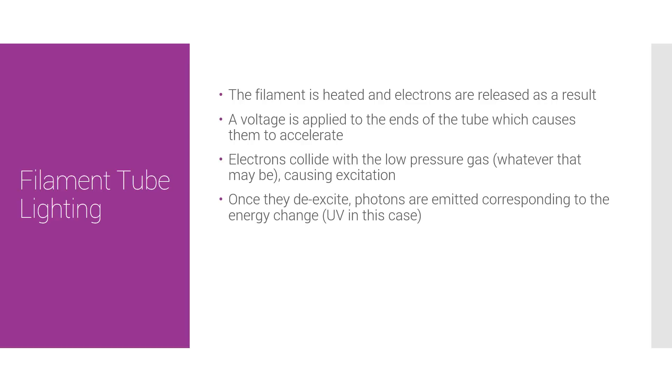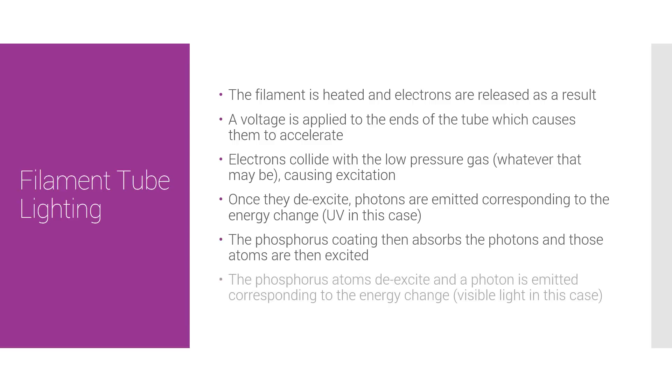Once they de-excite, photons are emitted corresponding to the energy change, which actually corresponds to UV light. Now UV light is dangerous, so the phosphorus coating on the filament tube then absorbs the photons and those atoms are then excited and then they are de-excited and a photon is emitted corresponding to the energy change, which in this case is visible light, which is the light we see and love.